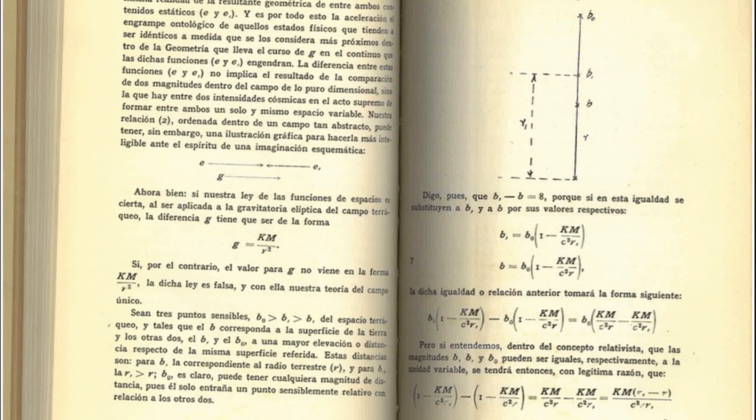If, on the other hand, the value for G does not come in the form of Km divided by V squared, the law is false, and with it, our field theory.